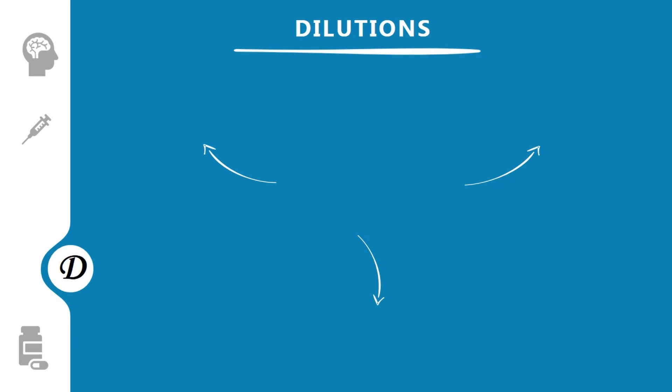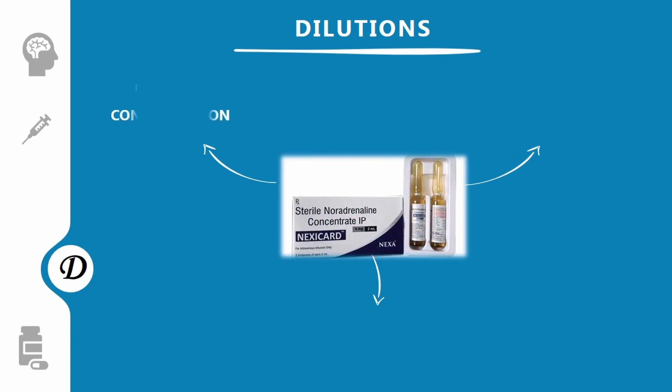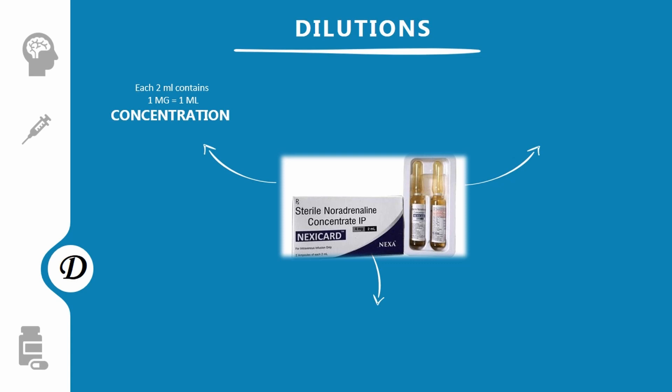How can you dilute the drug? The concentration available is a 2 ml ampoule where 1 ml equals 1 mg, so a 2 ml ampoule contains 2 mg of medication. The drug can be diluted with normal saline, 5% dextrose, or any isotonic solution as prescribed by the doctor. If using a syringe pump, take 46 ml of normal saline with 4 ml of drug — that is, 2 ampoules of noradrenaline.